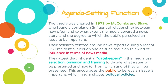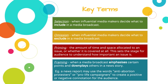They suggested that influential gatekeepers in the media use selection, omission, and framing to decide what issues will be presented and how, or from which angle they will be presented — whether they lean towards favouring one politician or the other. This encourages the public to believe an issue is important, which in turn shapes political policies. When McCombs and Shaw talk about gatekeepers, they are talking about particularly influential figures in the media — people like Rupert Murdoch, who owns quite a lot of media, would be considered a really influential gatekeeper.